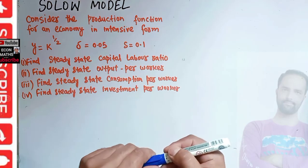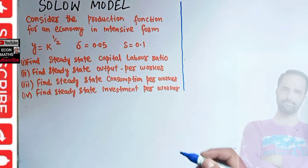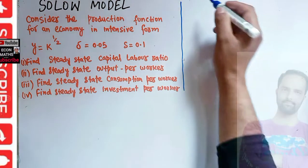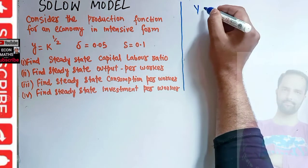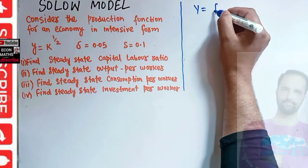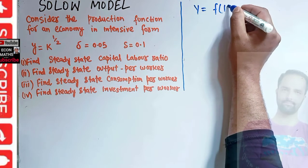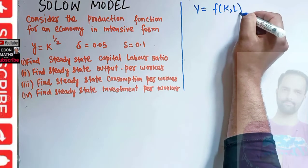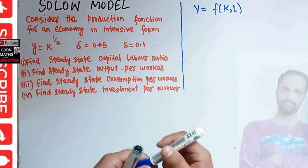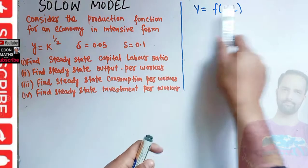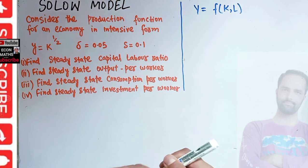Before we solve this, let us briefly see the mathematics behind the Solow model. First, we have the production function — y is equal to f of k, l — this is our aggregate production function for an economy. We write this production function in intensive form.